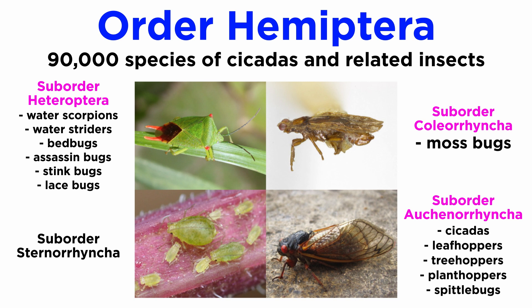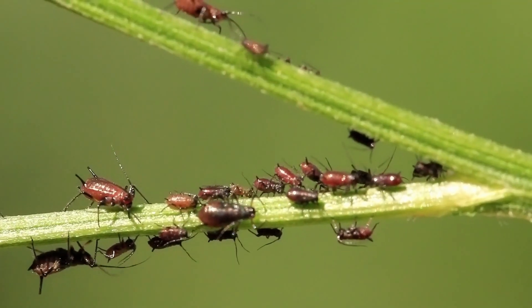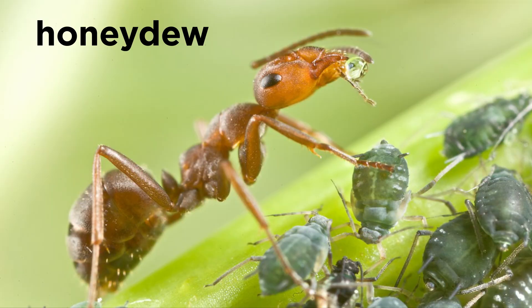Suborder Coleorrhyncha, meanwhile, includes less than 30 species of moss bugs, most of which are 2 to 5 millimeters in length and feed on moss. Finally, suborder Sternorrhyncha contains more than 11,000 species of aphids, whiteflies, mealybugs, and scale insects. They are small, plant-feeding insects, many of which are considered to be pests, and some of which share a mutualistic relationship with different species of ants, where they excrete honeydew in exchange for protection and transportation.